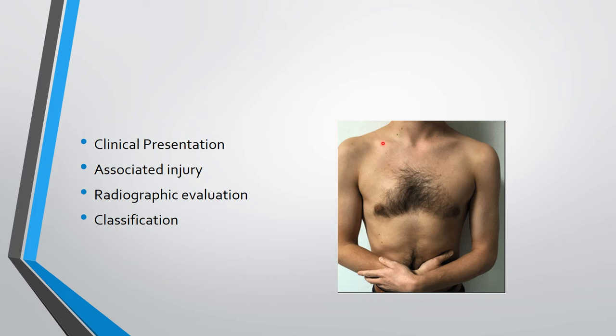For radiographic evaluation, we take an AP view of the clavicle. We also take a chest X-ray with both clavicles visible to assess for any shortening and how much shortening is present.